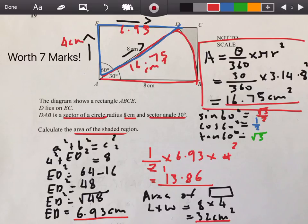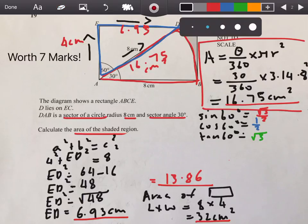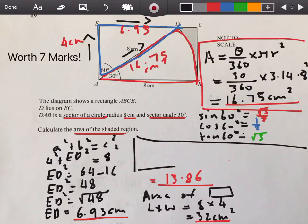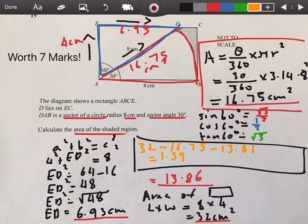We're on our last step now. Our final step is to take our total and subtract it by our two areas to find our shaded area. So, it's going to be 32 subtracted by 16.75, which is subtracted by 13.86. That was our area of the triangle at the top, from EDA. This is going to give you an answer of 1.39. So that's your answer. That's the area of the shaded region, 1.39.